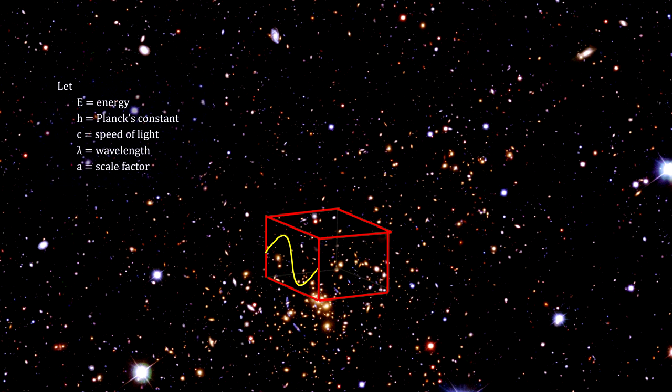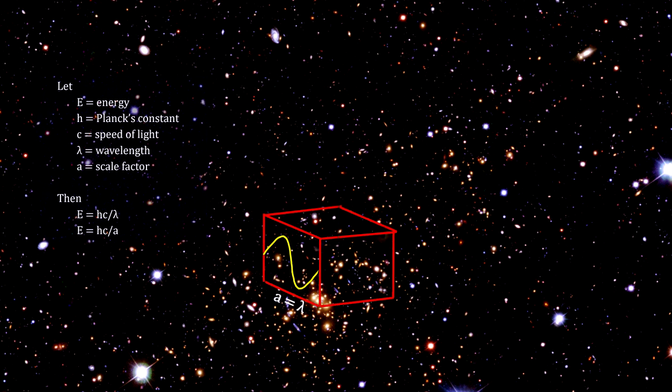Here's a cubic volume of space with a photon inside. The photon's wavelength, lambda, is equal to the length of the cube, A. Its energy is equal to Planck's constant times the speed of light divided by the wavelength.